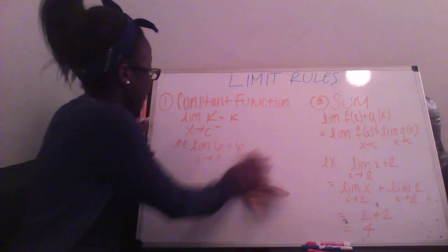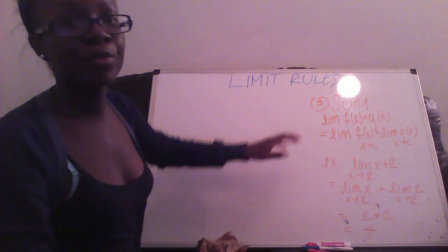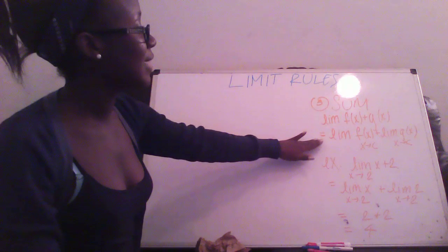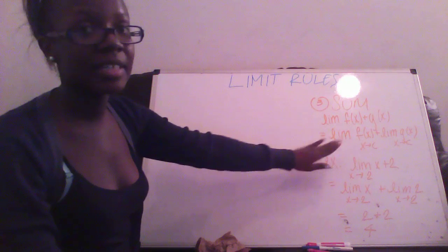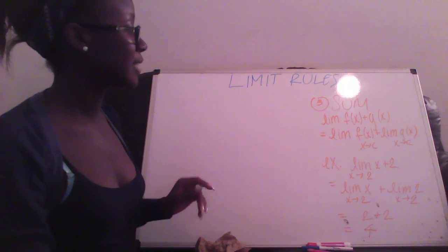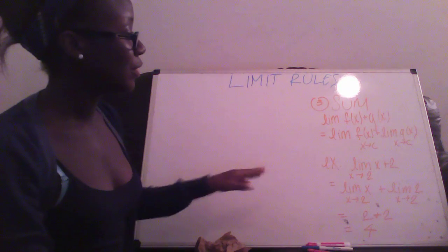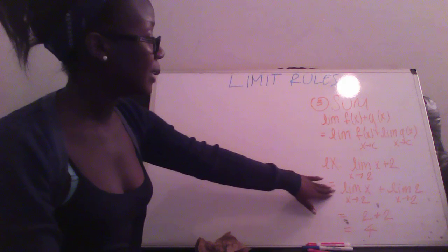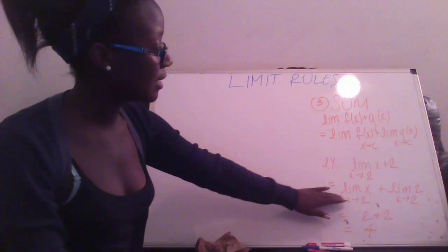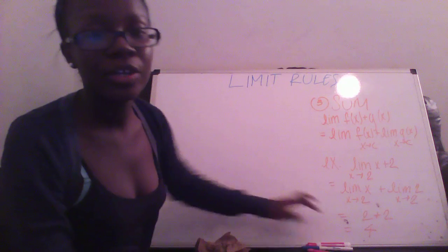For the third rule, it's the sum rule. For the sum rule, you have the limit of f(x) plus g(x), and you want to break that down to the limit of f(x) as x goes towards c, plus the limit of g(x) as x goes towards c. An example is the limit of x plus 2 with x going towards 2. You break it down to limit of x plus limit of 2, then plug in 2 for x, giving you 2 plus 2 equals 4.